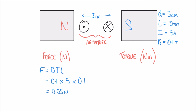We've calculated the force on one conductor, but we know the armature is experiencing two forces simultaneously — one pulling it up at one end and one pulling it down at the other. So the total force F_t equals two times the force we just calculated: 2 × 0.05, giving a total force of 0.1 newtons.